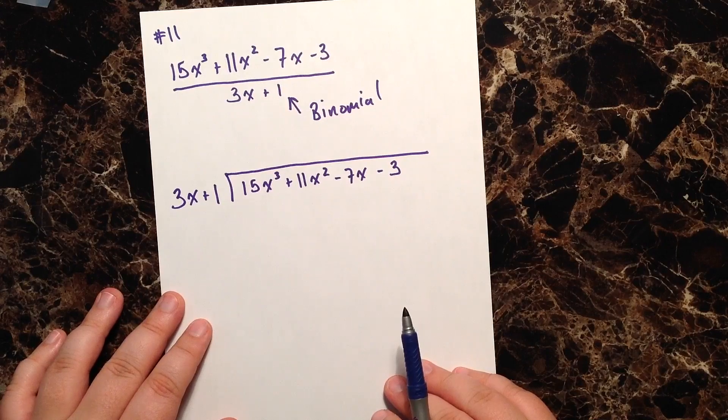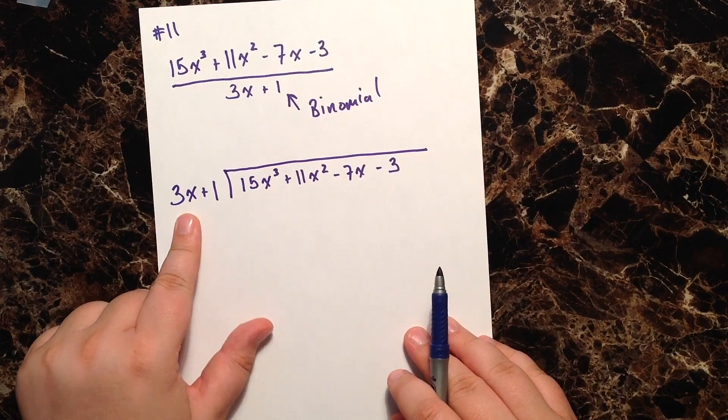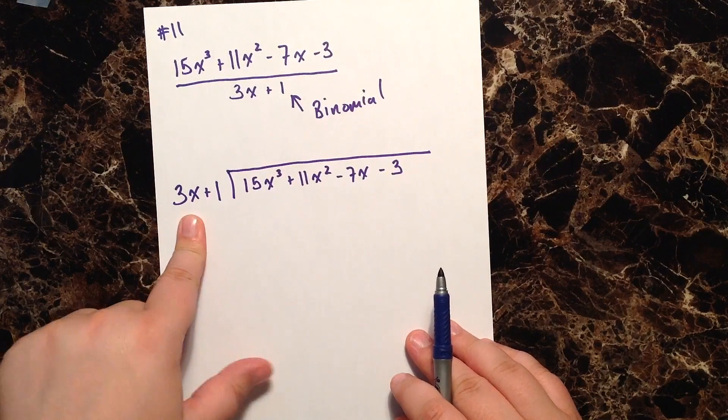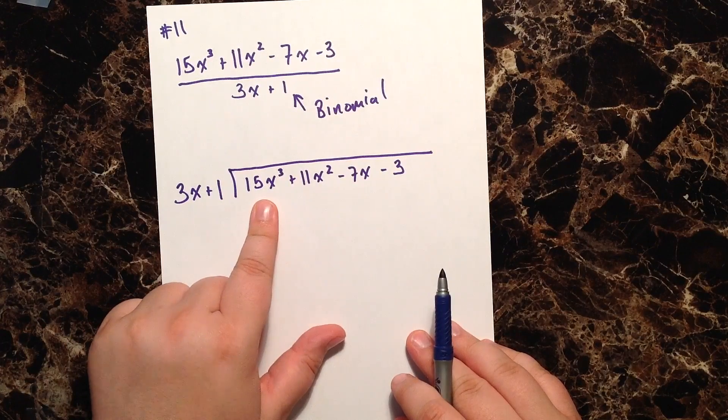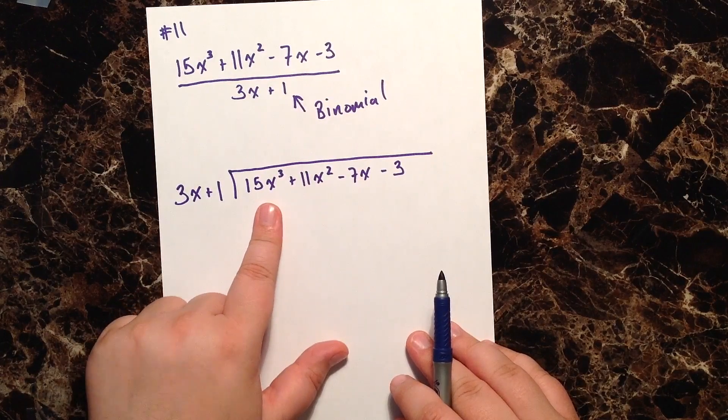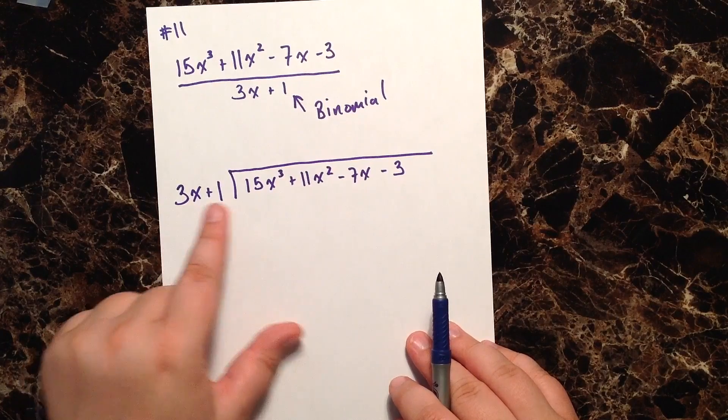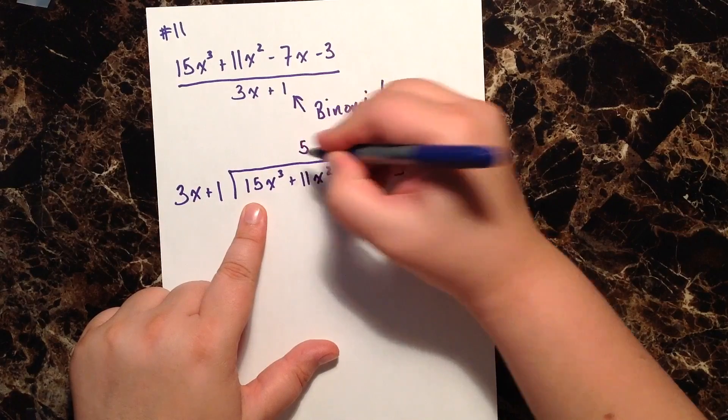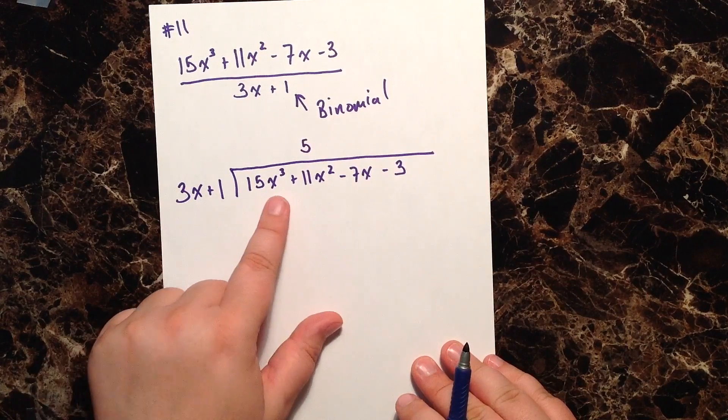All right, so let's go ahead and start this. The first thing we want to do is we ask ourselves what do we have to do to 3x to get to 15x to the third? Meaning what do we have to multiply 3x by to get to 15x to the third? Well, to get from 3 to 15 I know I'm going to have to multiply by 5, and to get from x to x to the third I have to multiply by x squared.